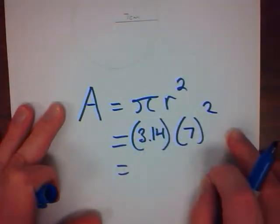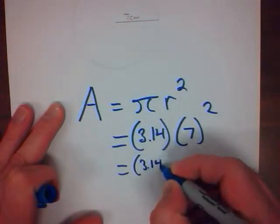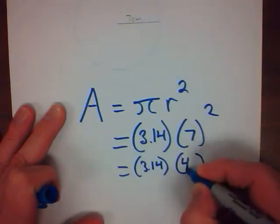And now, using our BEDMAS skills from before, we'll do the exponent first. 7 times 7 is 49.